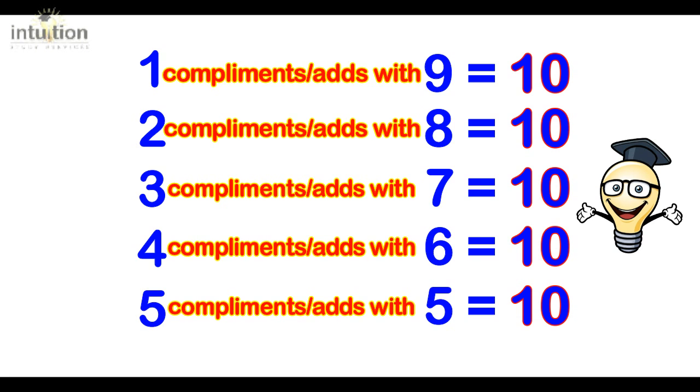So whenever we are presented with a string of numbers that we need to add, what we do is we look for the numbers that complement to 10 first and then we continue adding the rest of them afterwards. Let's take a look at an example.